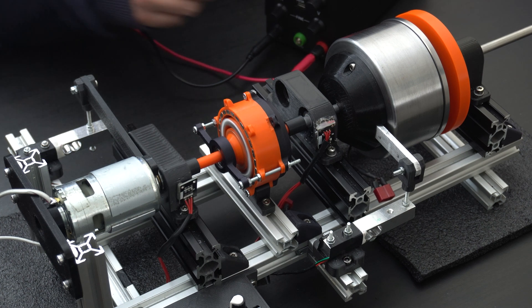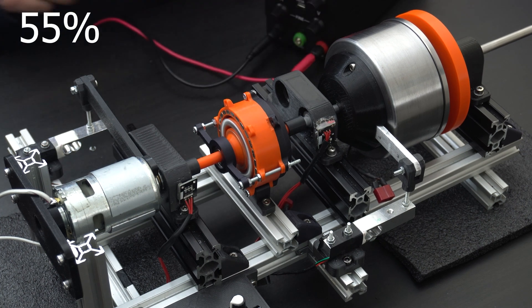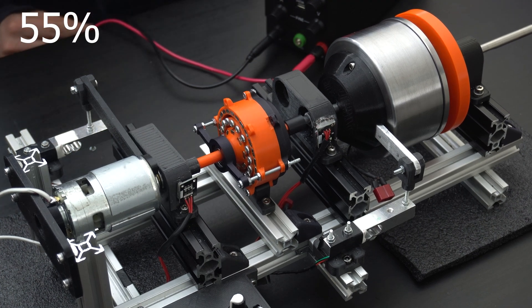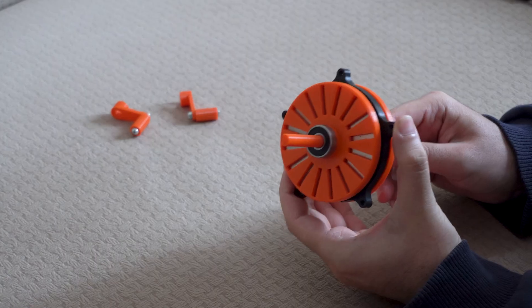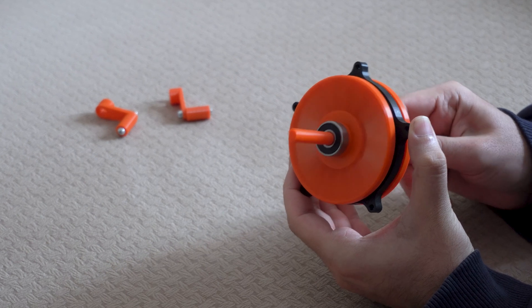So at first you think it would be more efficient. However, surprisingly, it turned out to be around 55%, which for some reason I couldn't trust this result, so I made this axial flux magnetic gearbox.